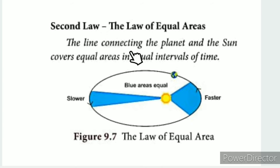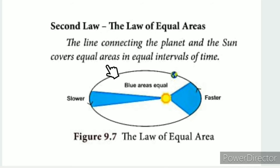Second law — law of equal areas: the line connecting the planet and the sun covers equal areas in equal intervals of time.